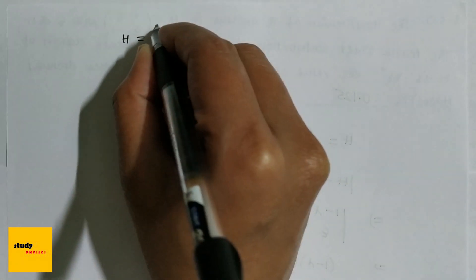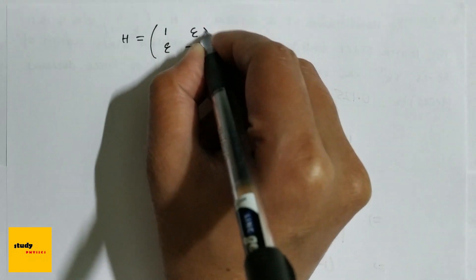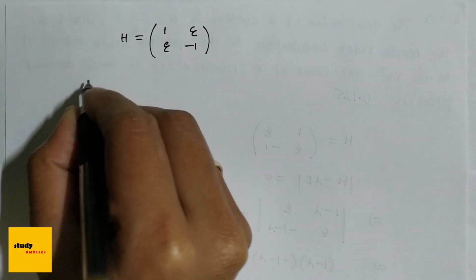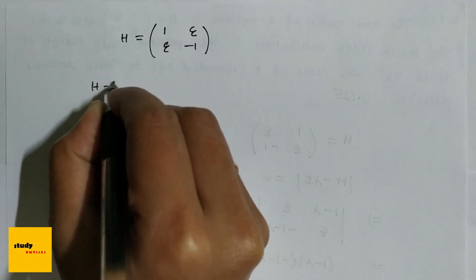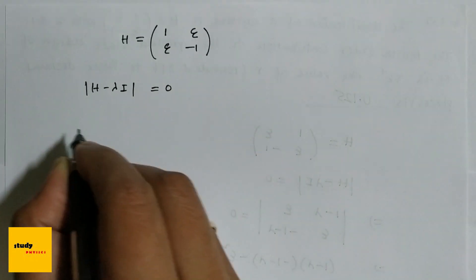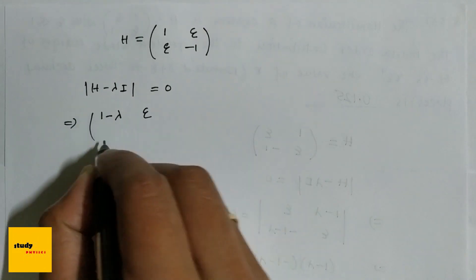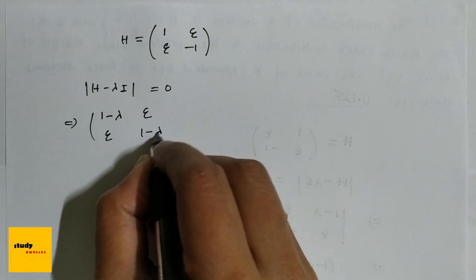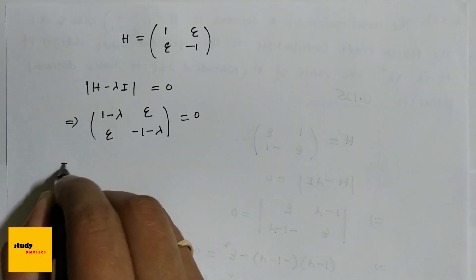So first we will find the energy eigenvalue. We write |H - λI| = 0. This gives us the determinant (1-λ, ξ; ξ, -1-λ) = 0.